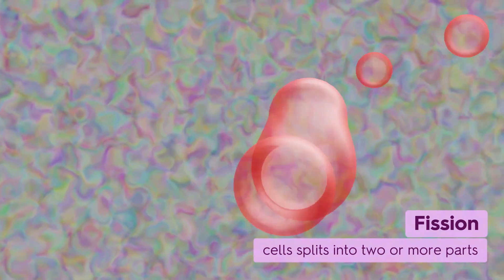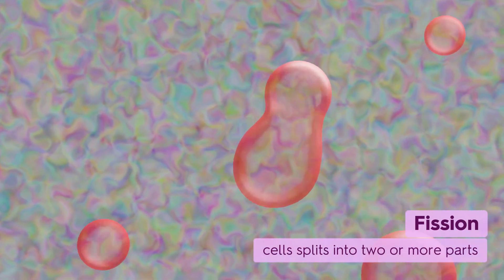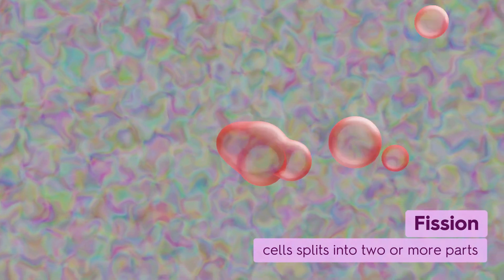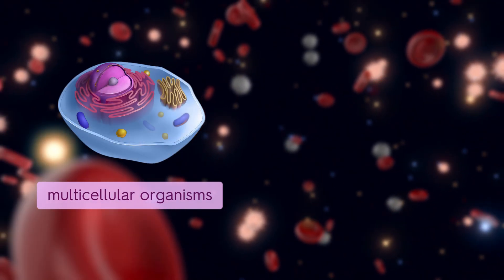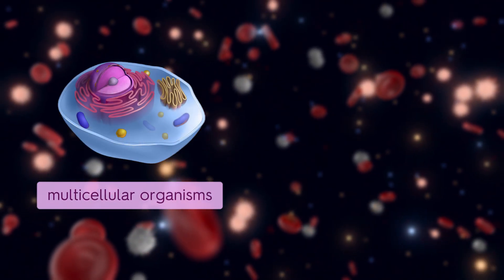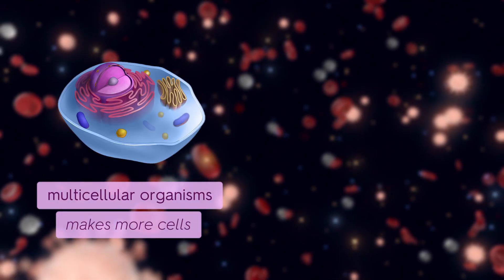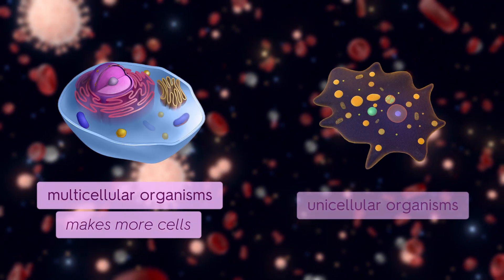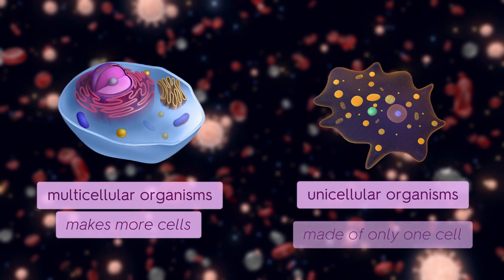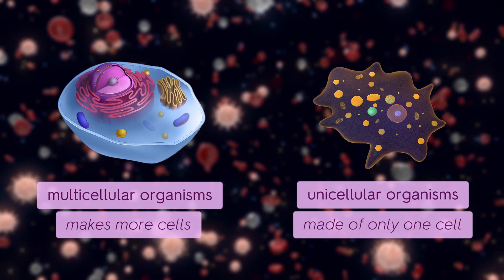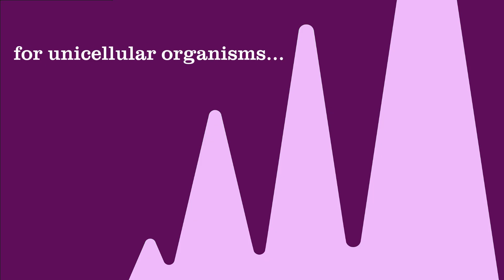Fission means a cell splits into two or more parts. But why is this considered reproduction? For multicellular organisms like humans, cell division just makes more cells inside the body. But for unicellular organisms, which are made of only one cell, splitting means creating a whole new organism. So yes, for them, cell division is reproduction.